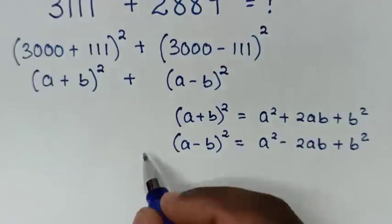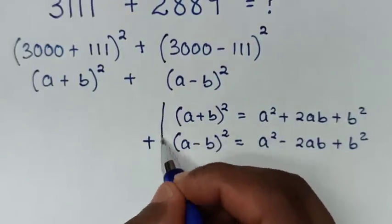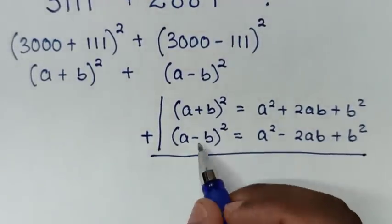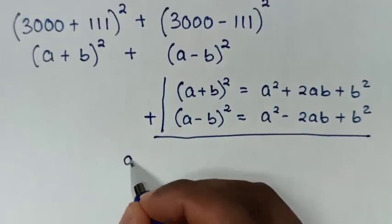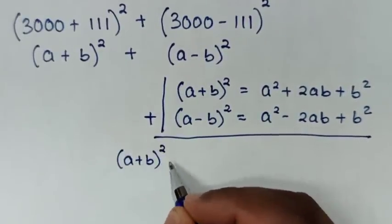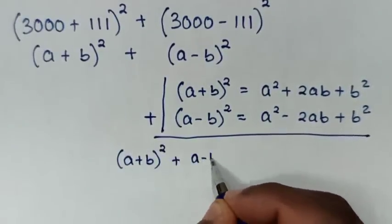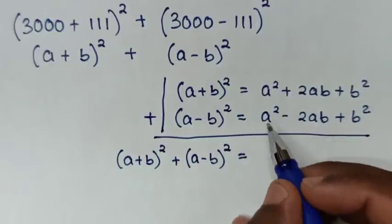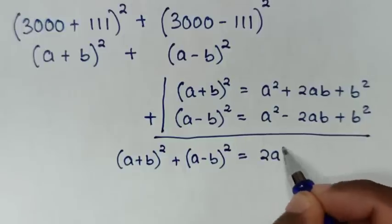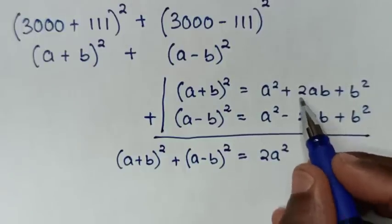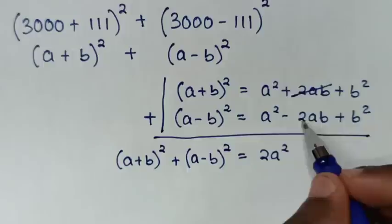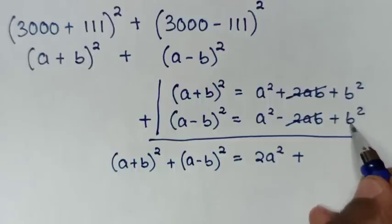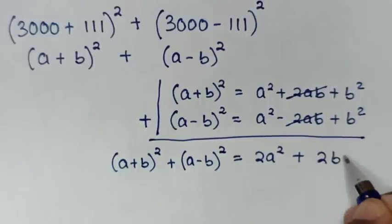Then we'll add these two formulas on the left side and on the right side. So (A plus B) squared plus (A minus B) squared is equal to: A squared plus A squared is 2A squared, then 2AB minus 2AB is 0, so those cancel. Then B squared plus B squared is 2B squared.